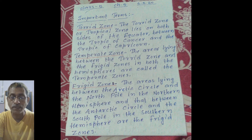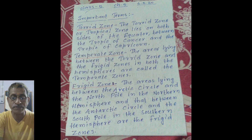2. Temperate zone. The areas laying between the Torrid zone and the Frigate zone in both the hemispheres are called the Temperate zone.